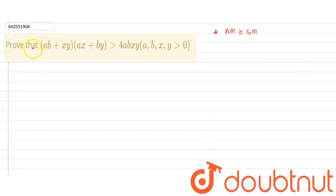So, here we have to prove that (ab + xy)(ax + by) is greater than 4abxy. Right? So, we have to verify this. How we will verify this?